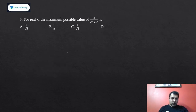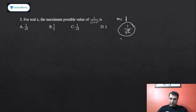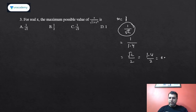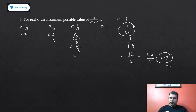Moving to the last question — it's an easy one from CAT 2020 or 2021. For real x, find the maximum possible value of x/√(1+x⁴). If I simply put x=1, I get 1/√2, which is approximately 1/1.414 or about 0.7. One option is 1/2 = 0.5, and 0.7 is greater than that, so that can't be the maximum. Another option, √3/3 ≈ 1.7/3, is less than 0.7. So those are ruled out, leaving 1/√2 or 1.